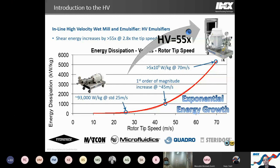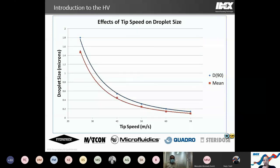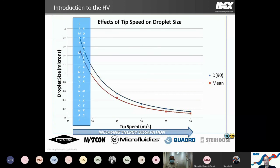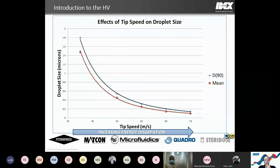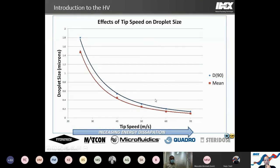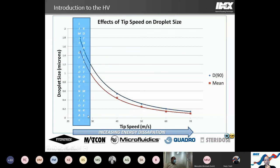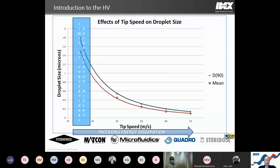Looking at it from an emulsion standpoint, as we increase tip speed we dissipate more energy, generating smaller droplet sizes. The conventional rotor stator levels off around the 1 micron range at 25 to 30 meters per second. As we increase to the HV's 70 meters per second, we can generate nano-sized results — as low as about 150 nanometers with emulsion work. A lot comes back to emulsion chemistry, but you need the energy to get there.